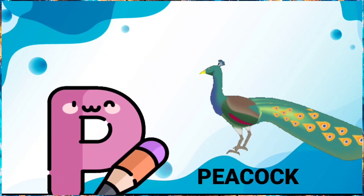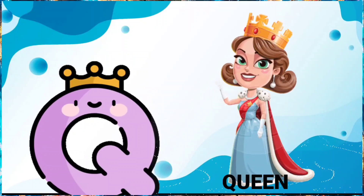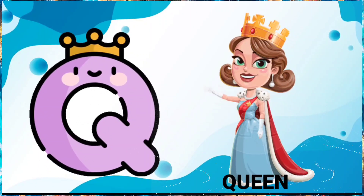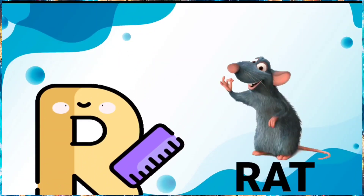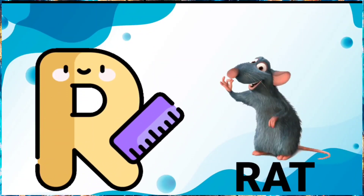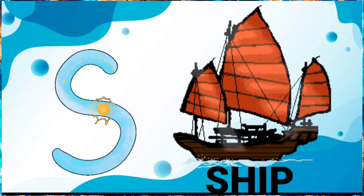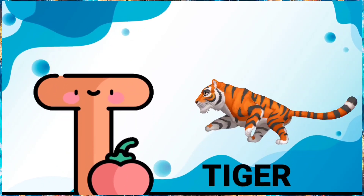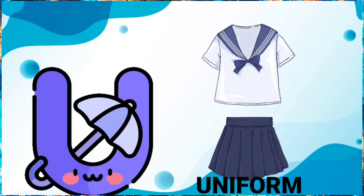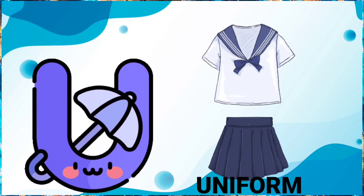B for peacock, Q for queen, R for rat, S for sheep, D for tiger, U for uniform.